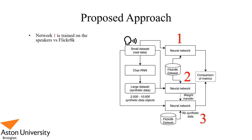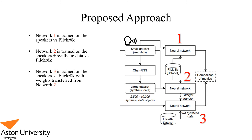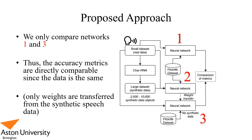Let's quickly go over the proposed approach. We can see here three neural networks. Network one is trained on identifying the real speakers versus Flickr 8K. Network two is trained on the speakers and the synthetic data versus Flickr 8K. Network three is trained on the speakers versus Flickr 8K with the weights transferred from network two. We actually only compare networks one and three, since they are training and classifying identical data and are directly comparable.